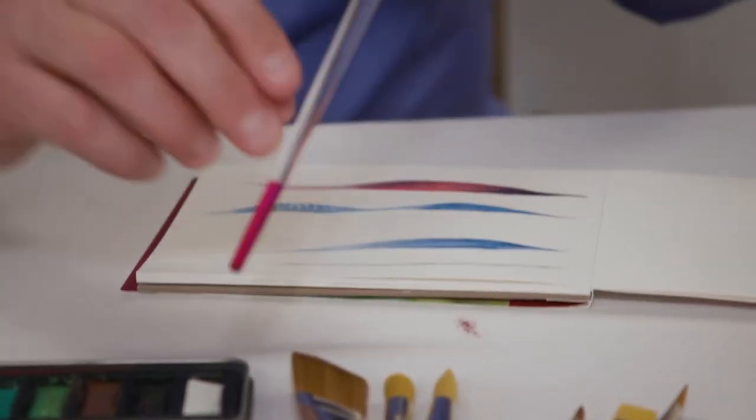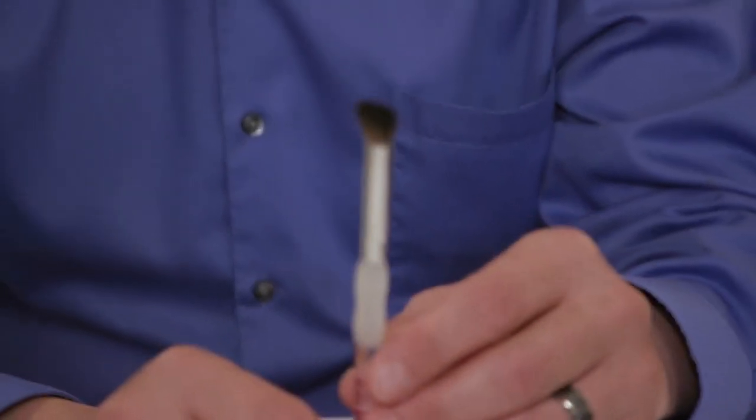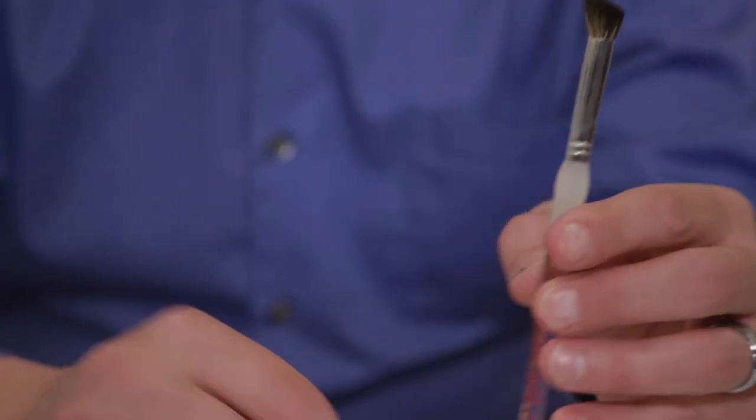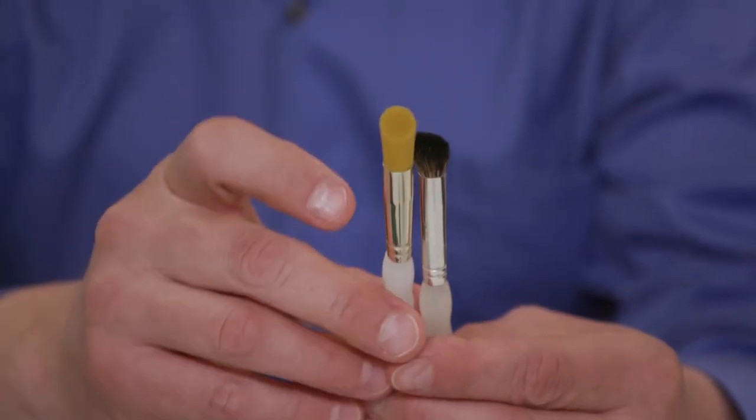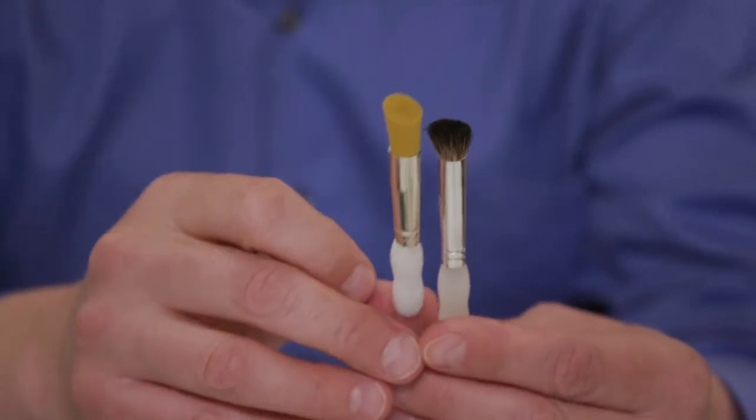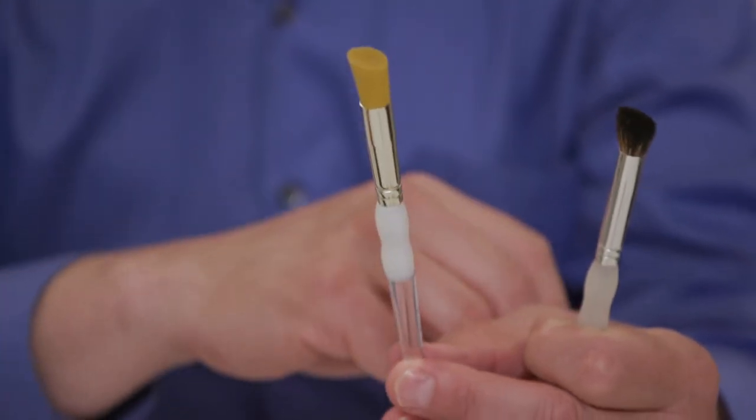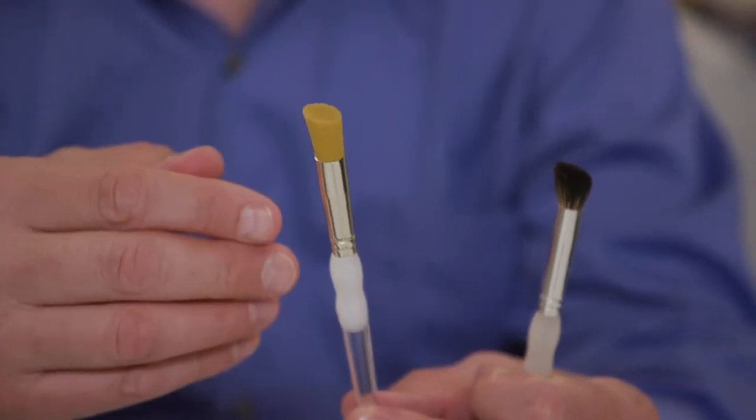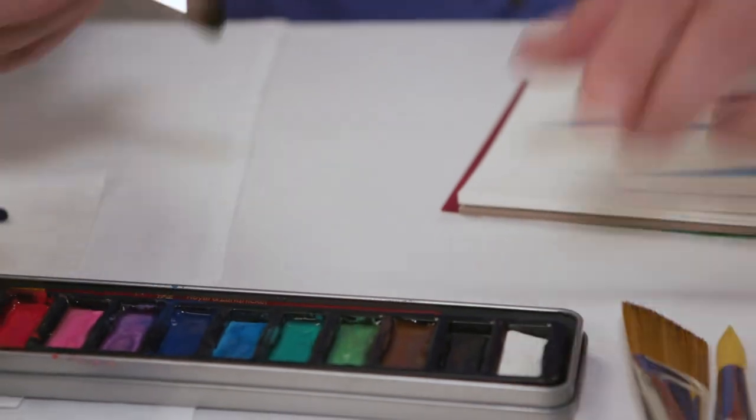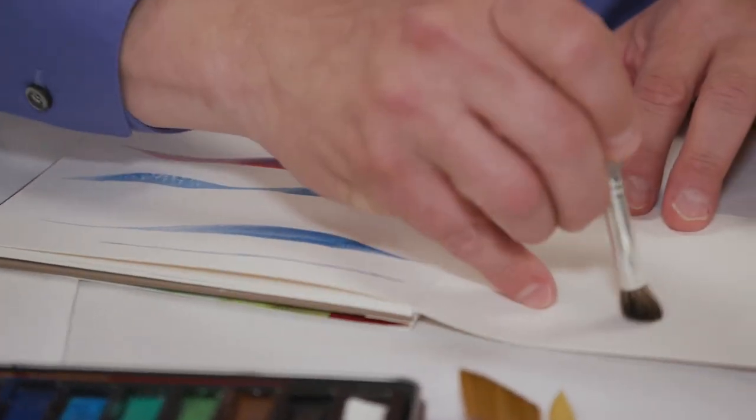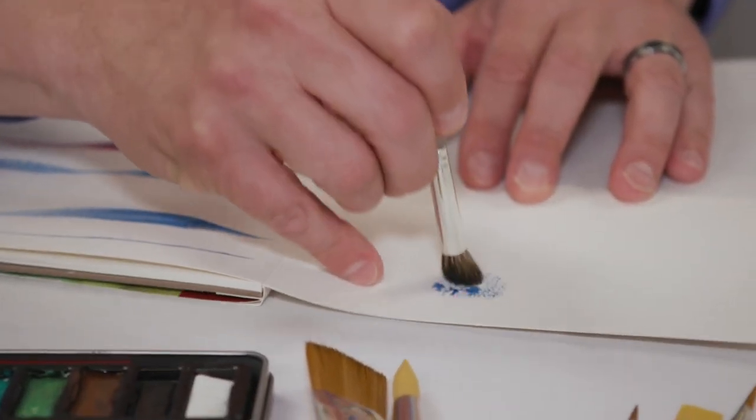The next brush I want to show you is the Deerfoot Stippler, which is a unique shape. It comes in a natural hair version, and it also comes in a gold taclon version. Natural hair is a little bit softer, gold taclon is a little stiffer. A lot of people will use that Deerfoot for things like stenciling because it's a little bit stiffer, but both can be used for techniques where you load with color and you kind of pounce that brush to get texture.